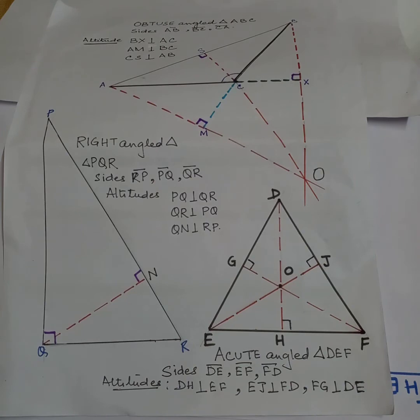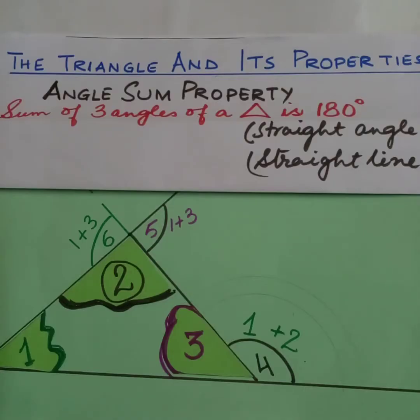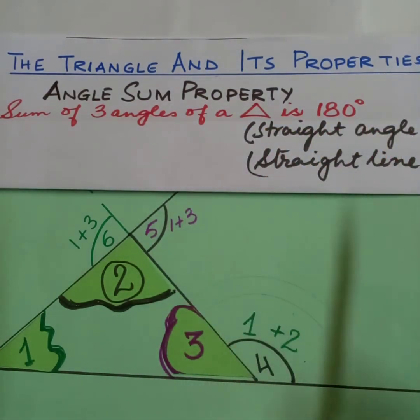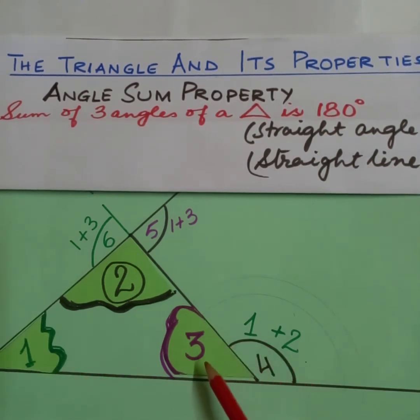Now we will study about the angle sum property of a triangle. This states that sum of all three angles of a triangle is 180 degrees. That means if the three angles are put together they form a straight line or a straight angle. Now see, these are the three angles: angle 1, 2, 3 of this triangle, and this is the external angle on this side. If we put this as angle 4, that means angle 3 and angle 4 together form 180 degrees because this is a straight line.